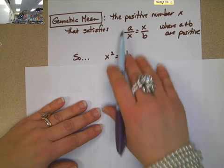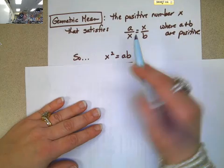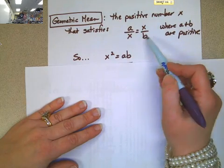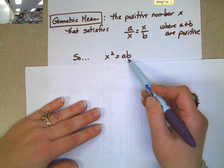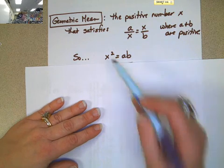So, if I were to use that cross products property, that would be that X squared is equal to A times B. And so, that's also true if I take the square root of both sides.